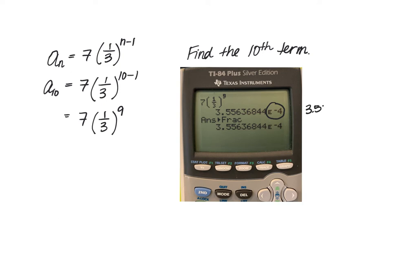So this is like 3.55636844 times 10 to the negative 4th power, which essentially means you would move your decimal four times to the left. And then we would add zeros for those missing values.